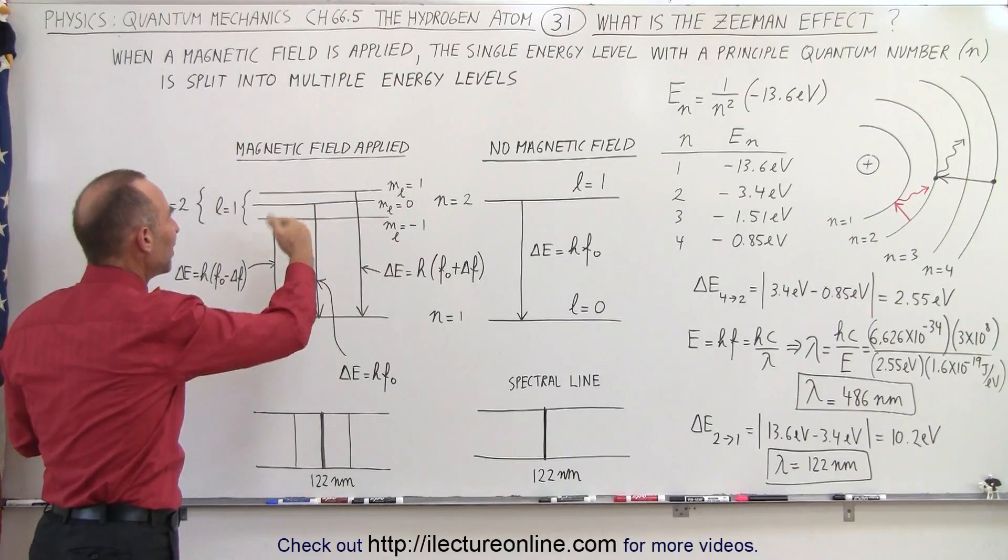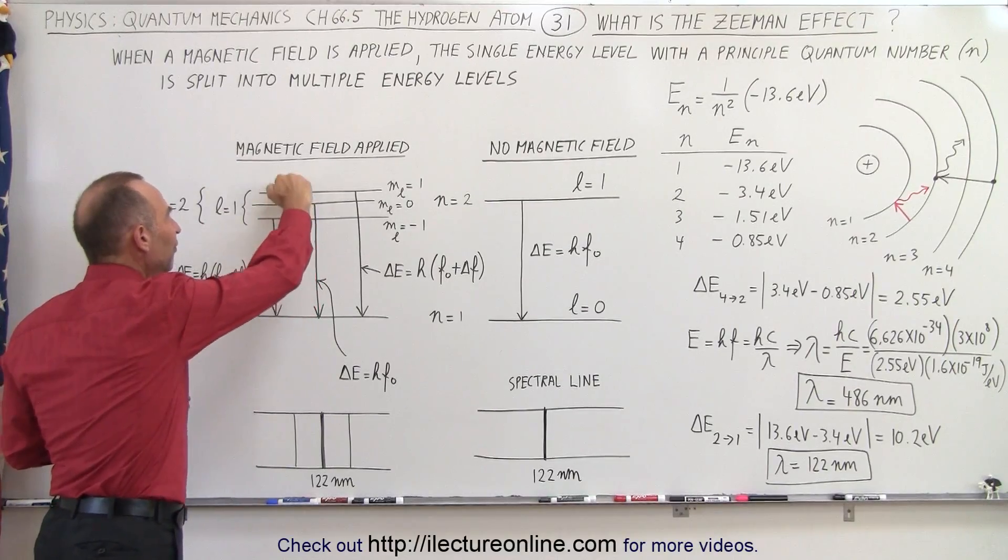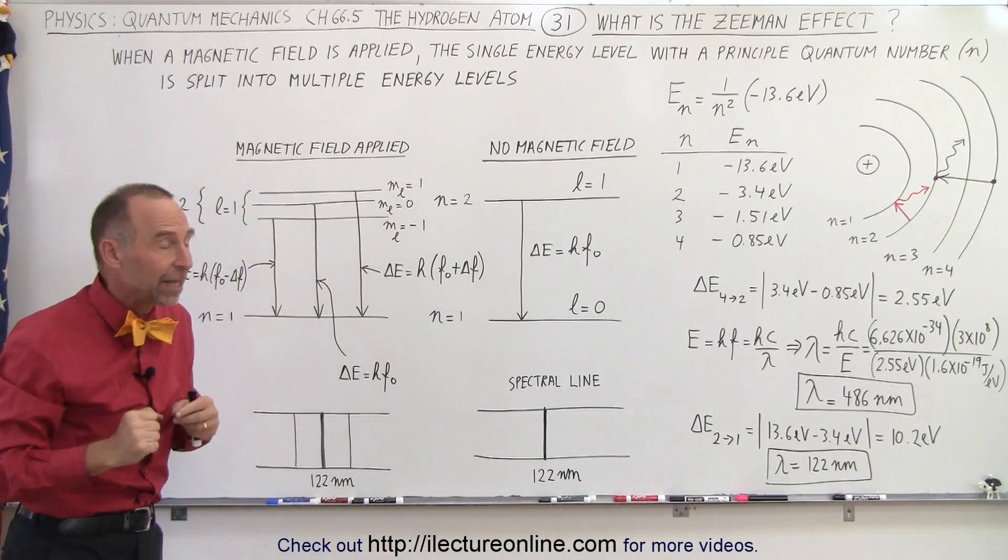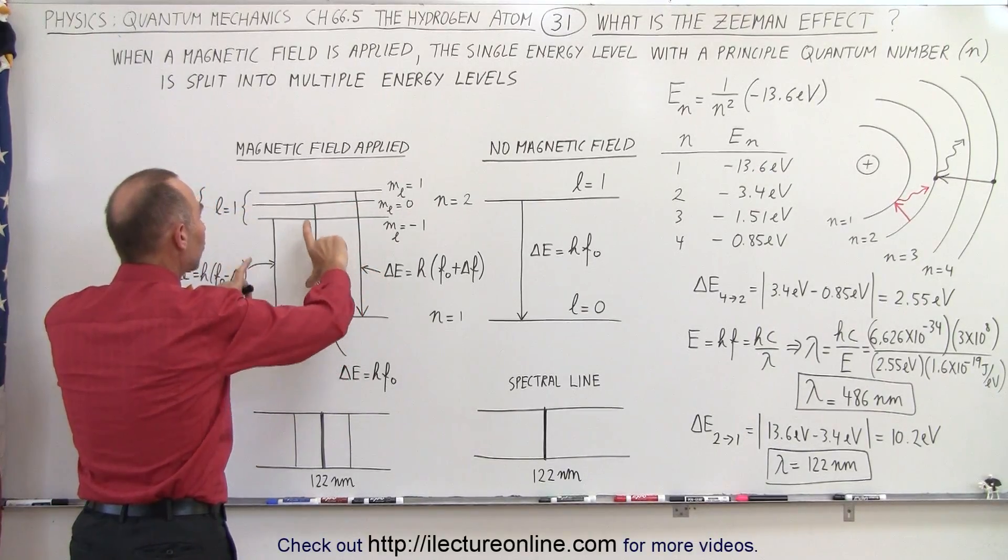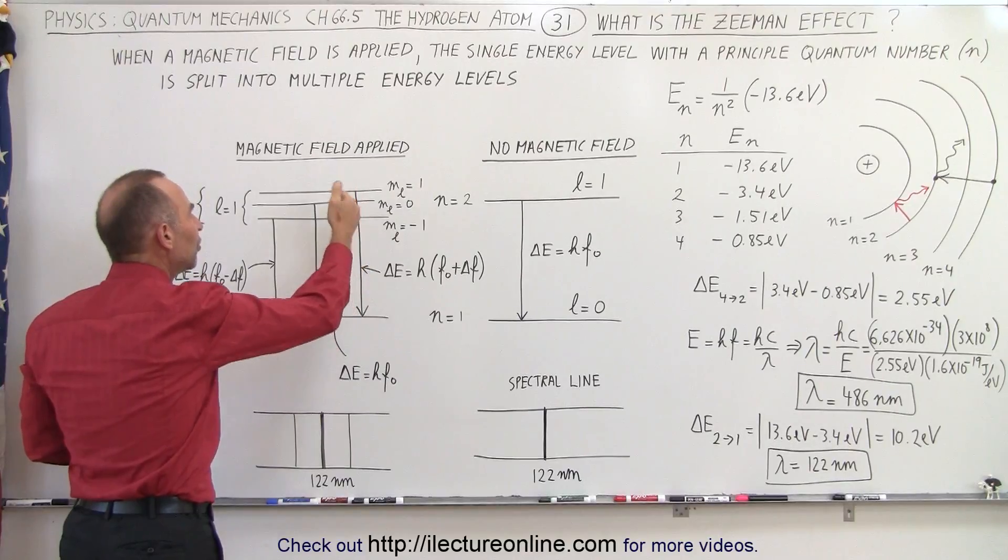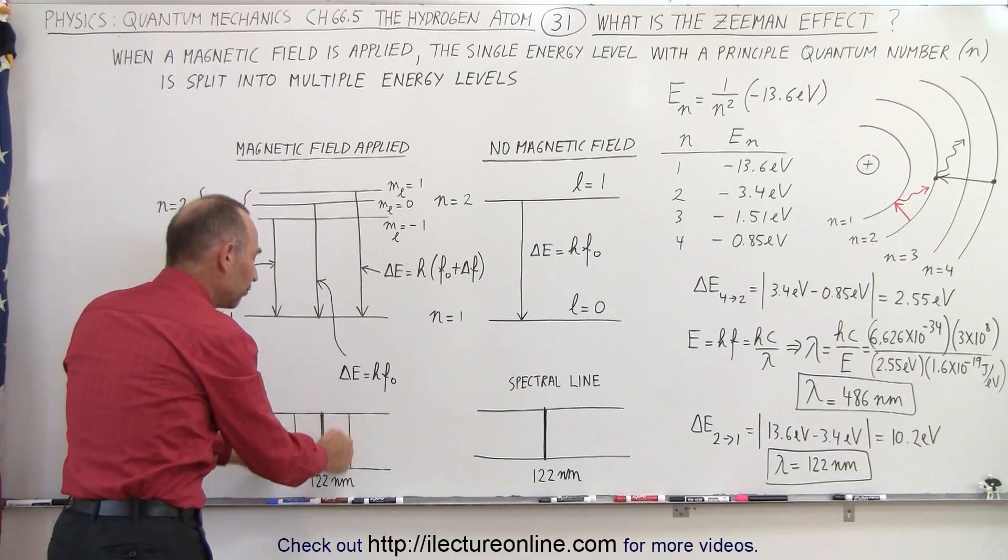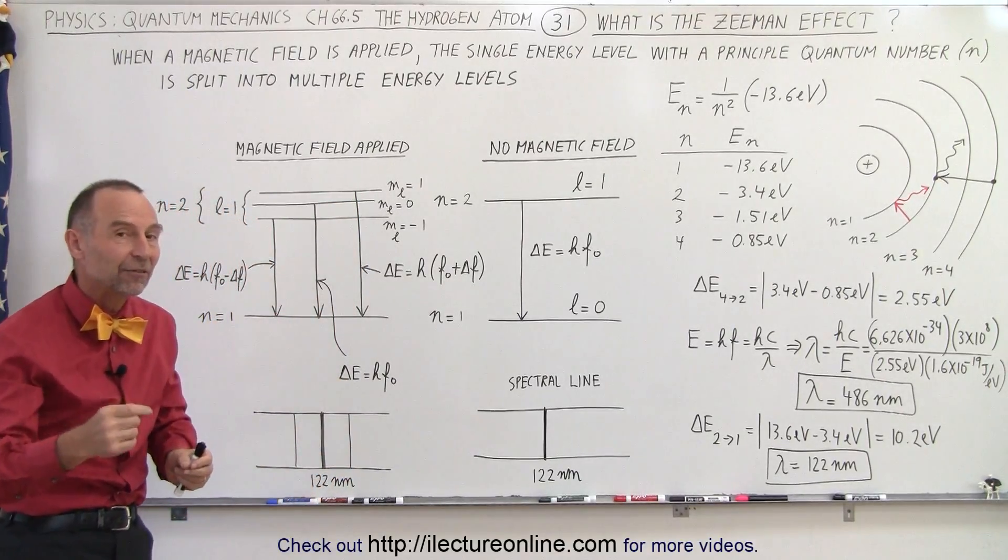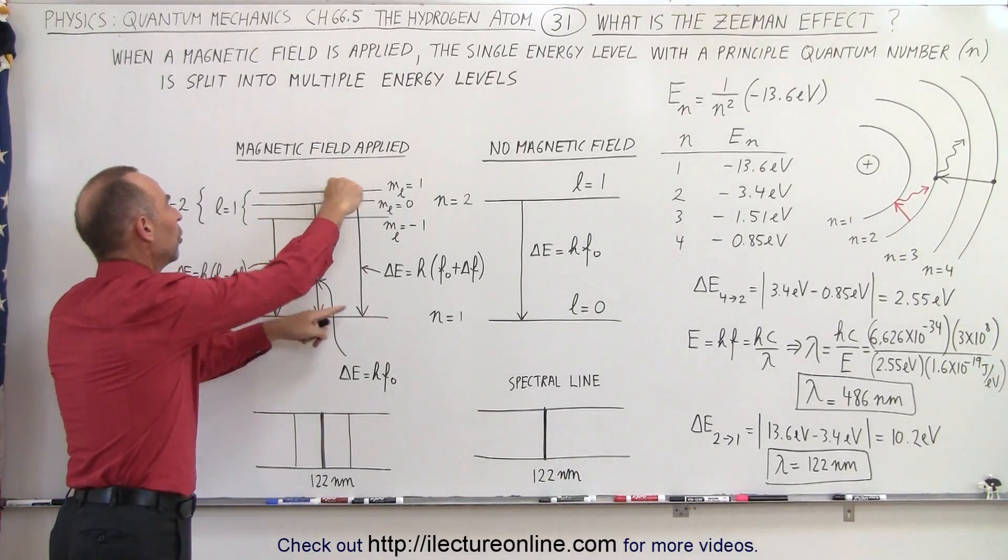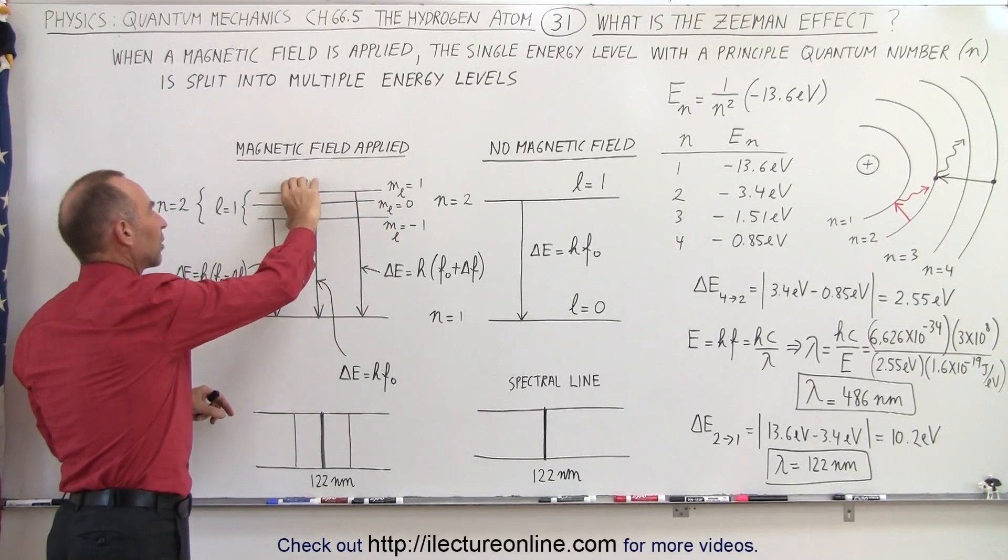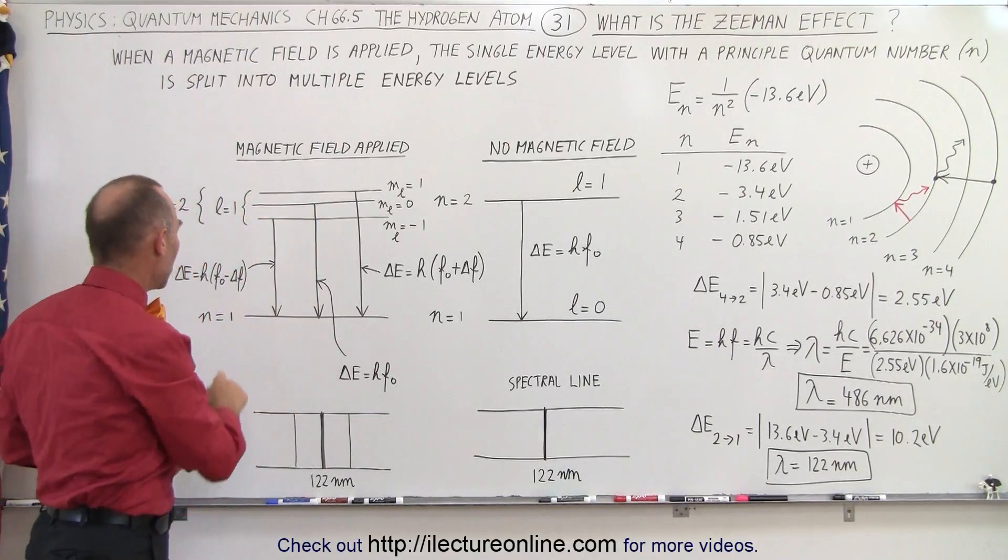In other words, when we apply a magnetic field, we now have three different possible orientations for the angular momentum. The jumps of the electrons cause slightly different energy differences, which are associated with photons being emitted that have slightly different wavelengths and energies according to those energy differences from where the electron came from to where the electron is going.